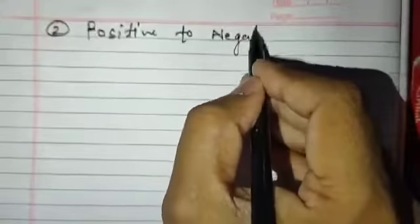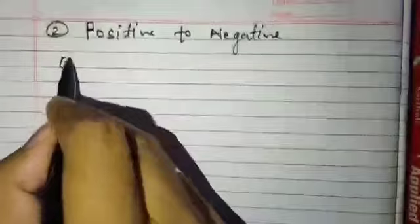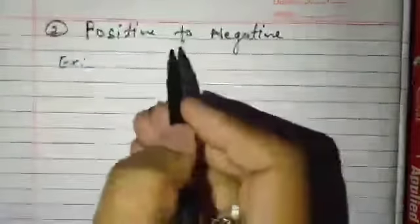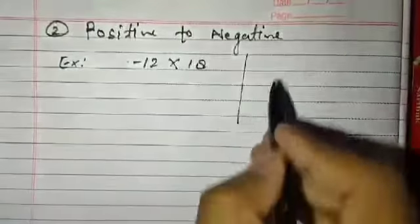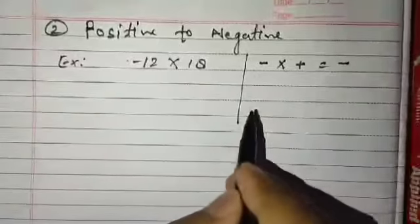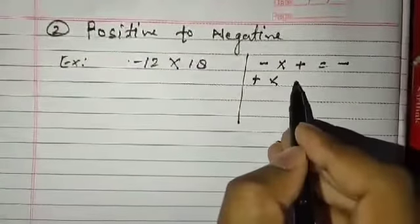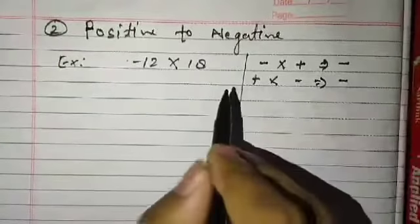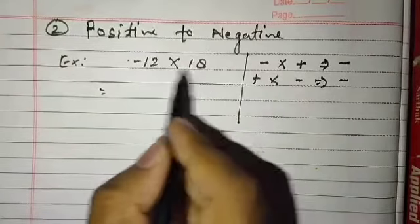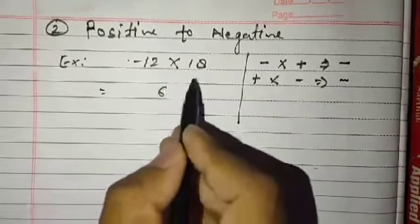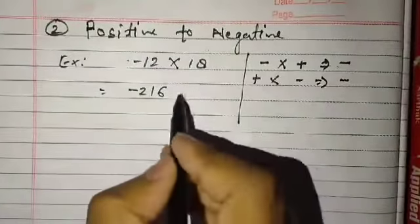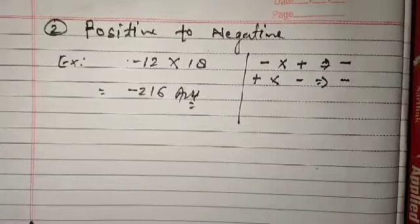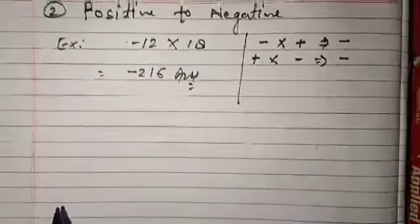Case two: one positive and one negative number — for example, minus 12 multiplied by 18. The sign convention: a negative number multiplied by a positive number always gives a negative answer. You may also write it as positive multiplied by negative, and the answer will still always be negative. Multiply 12 by 18 to get 216, and since the answer is negative, we put the negative symbol — the answer is minus 216.